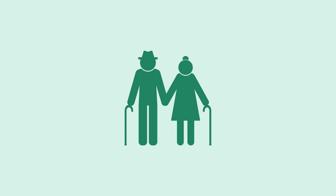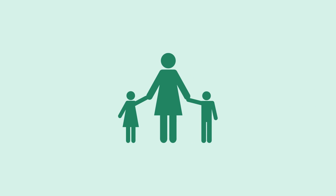The poverty rate varies among different groups of society. For instance, the older population is less likely on average to be below the poverty line. The poverty rate of female households without a spouse present is about five times higher than that of married couple families.